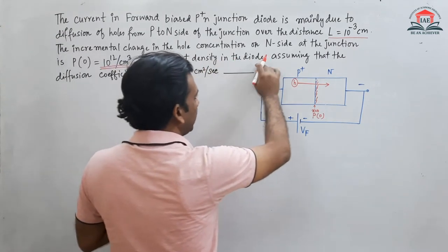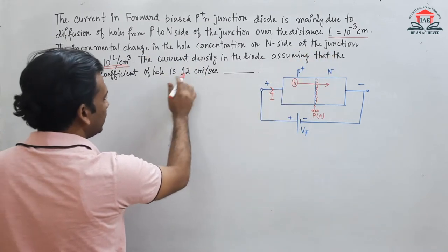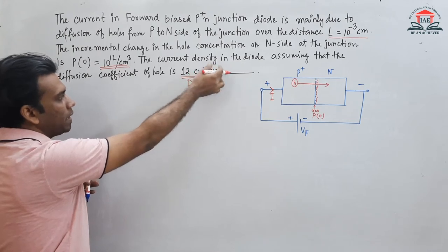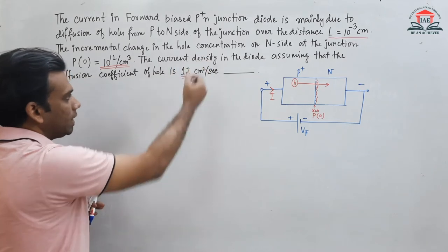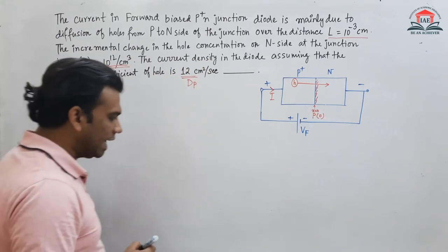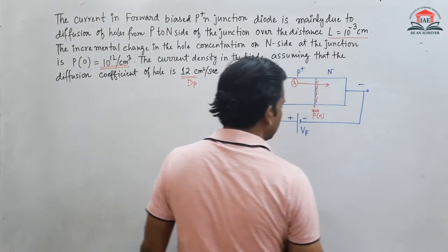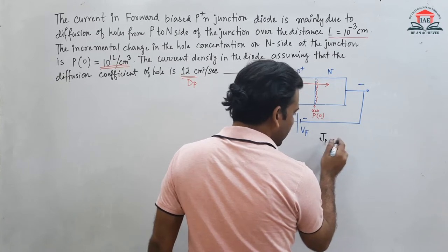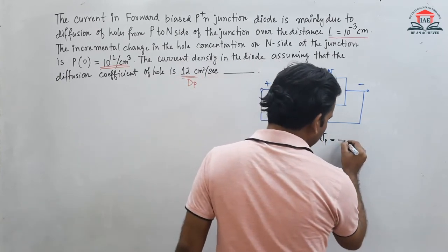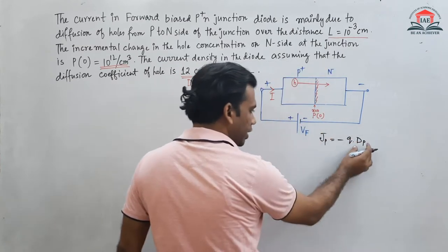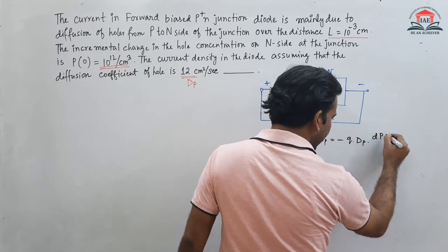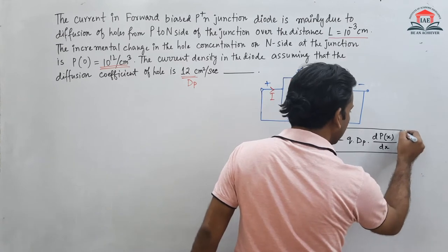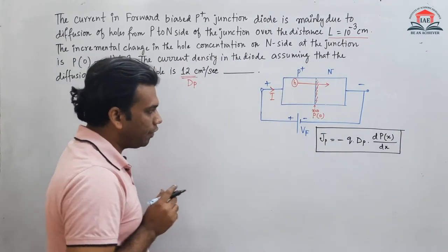The current density in the diode — assuming the diffusion coefficient of the holes is Dp = 12 cm² per second. Now we have to find the total current density. The current density due to the holes is denoted by Jp, and we know that Jp = q · Dp · (dP/dx), where dP/dx is the concentration gradient of the holes.